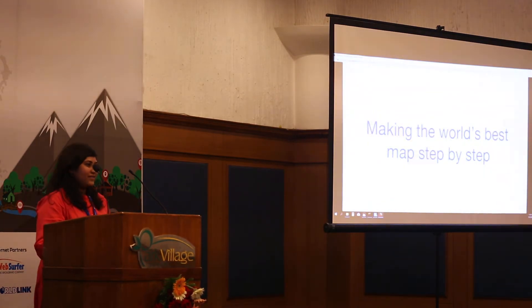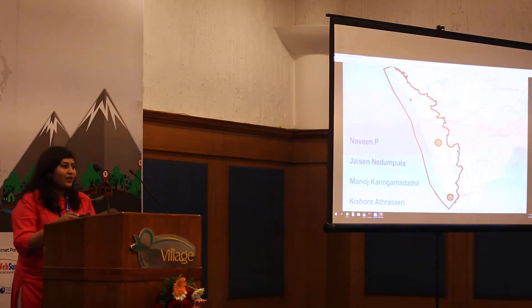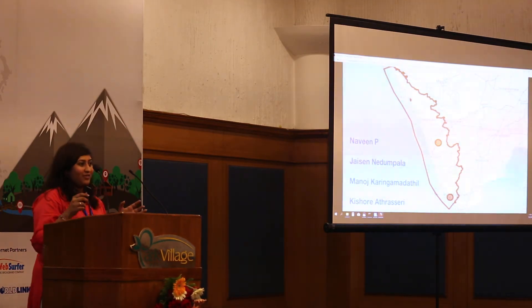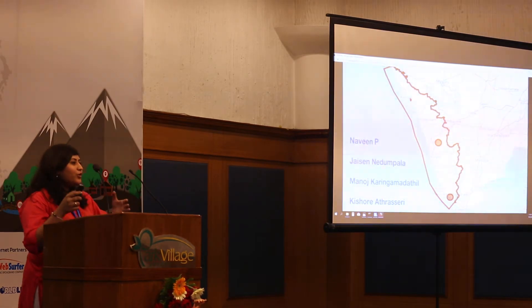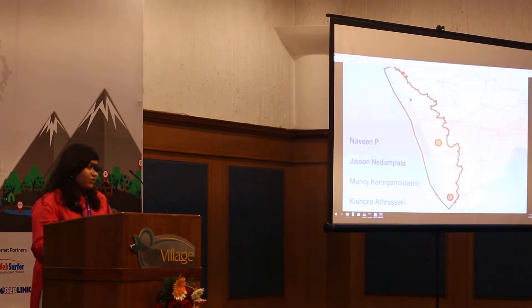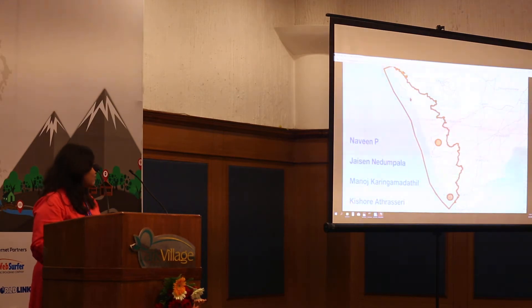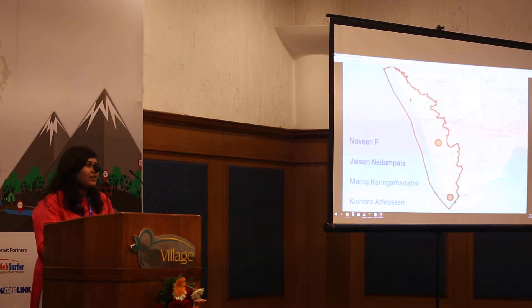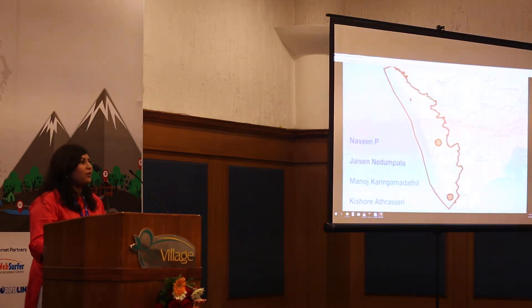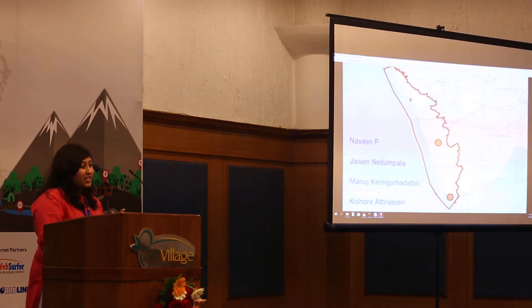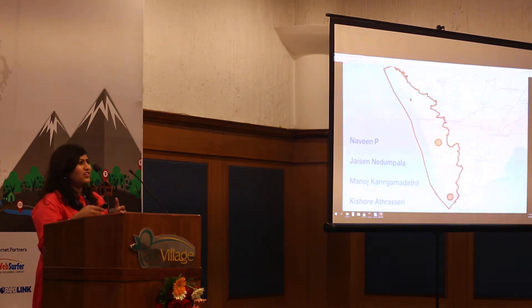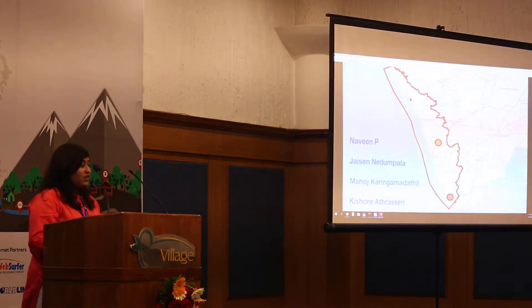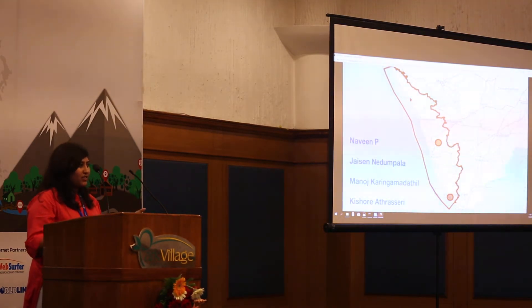We are making the world's best map, step by step. I'll start with Kerala, which is a beautiful state. There are a few very active contributors — among them are Naveen, Jason, Manoj, and Kishore. They have been actively trying to bring the OSM community together through different activities. They've started mapping national highways, they're trying to bring Wikidata and OSM together, and they are conducting mapathons across Kerala.